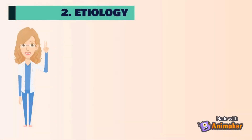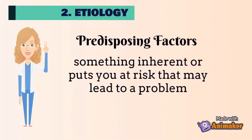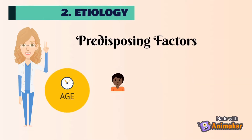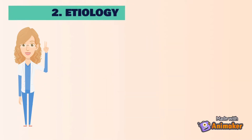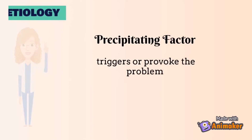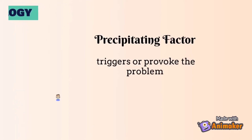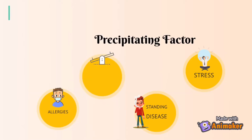Then, we have to start the diagram with the etiology — the predisposing and precipitating factors. Predisposing factors are something inherent or that puts you at risk, such as age, race, gender, or history. Precipitating factors are triggers that provoke the problem, such as allergies, existing disease, stress, or electrolyte imbalance.